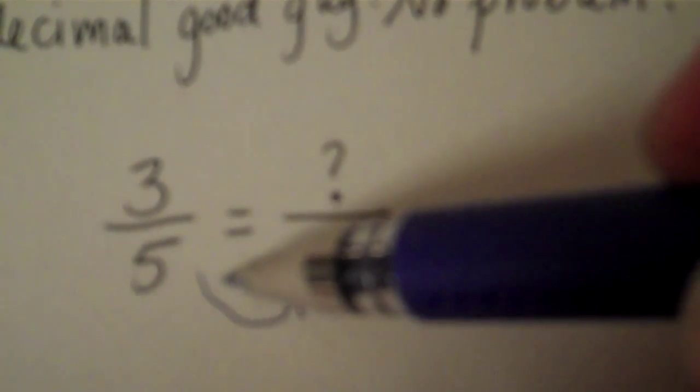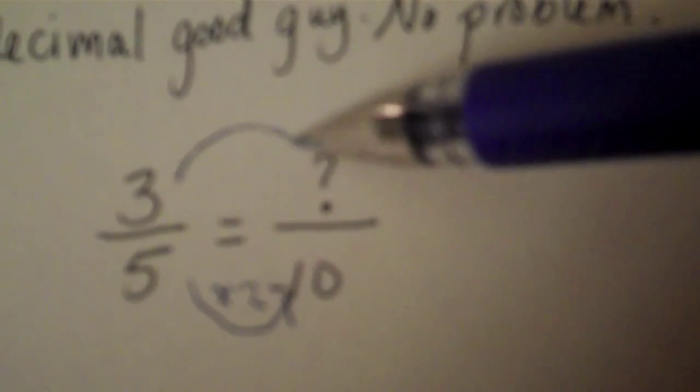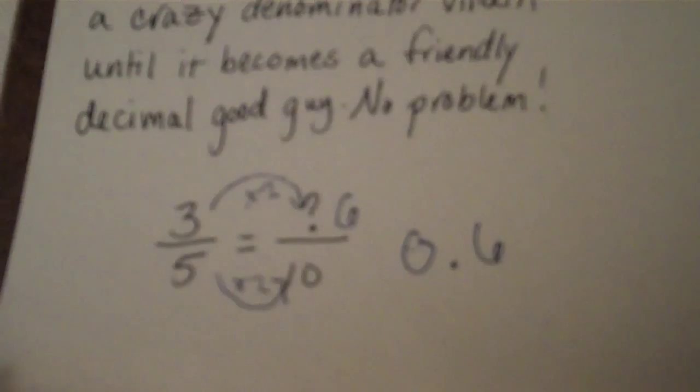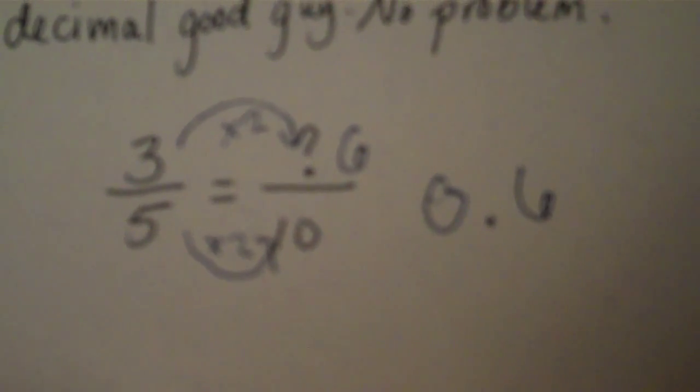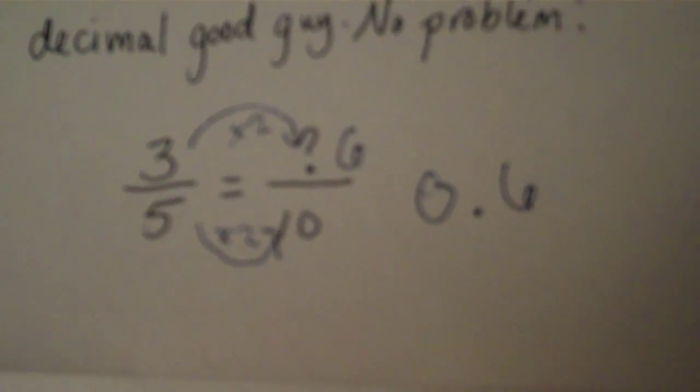Well, I need to multiply five by two to get to ten. So that means I need to multiply three by two on the top. Six tenths! Whoa! Awesome! No problem! Three fifths is the same as six tenths. If I have three fifths of a pizza, I have the same amount of pizza as Billy, who has six tenths of a pizza. No problem!